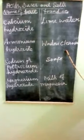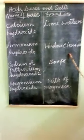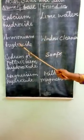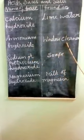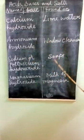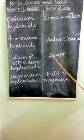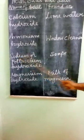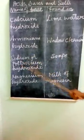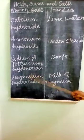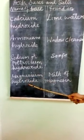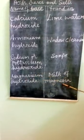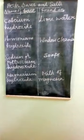Window cleaner contains ammonium hydroxide, which is a base, to clean the dirt from windows. Soaps contain the base sodium hydroxide or potassium hydroxide. Magnesium hydroxide is the base present in milk of magnesia.